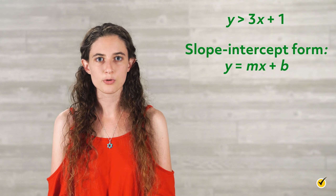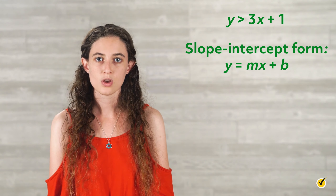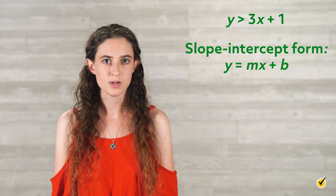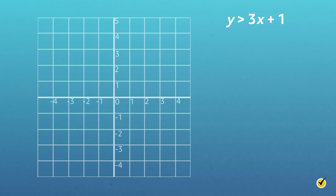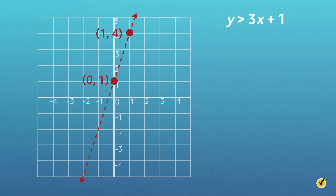So far we've looked at inequalities that contain one variable. What if an inequality has two variables? Consider y is greater than 3x plus 1. Since there are two variables, we need to illustrate the solution set on a coordinate plane. Notice that this is in slope-intercept form, y equals mx plus b. The first step is to graph the line: the y-intercept b is 1, so the line will intersect the y-axis at (0, 1). The slope m is 3, so starting at (0, 1), move up 3 units and right 1 unit to (1, 4). Since the inequality sign is greater than and not greater than or equal to, connect the ordered pairs with a dashed line, meaning points on this line are not possible solutions.